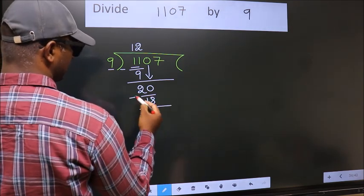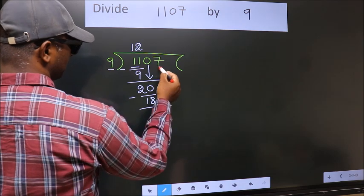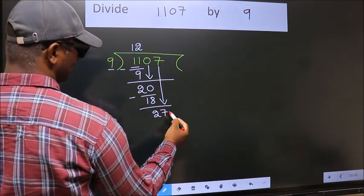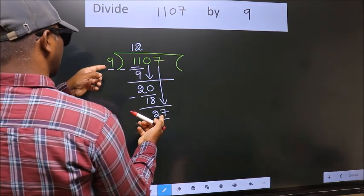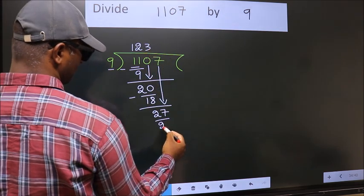Now we subtract. We get 2. After this, bring down the beside number. So 7 down. So 27. When do we get 27? In the 9 table, 9 3s 27.